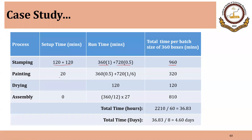Similarly for painting, 20 minutes was the changeover time. 0.5 minute was the runtime for part A, so 360 into 0.5, and 10 seconds was the runtime for part B, so 720 into one-sixth. That turns out to be 320 minutes, and it takes two hours for the painted parts to dry, so that is 120 minutes.